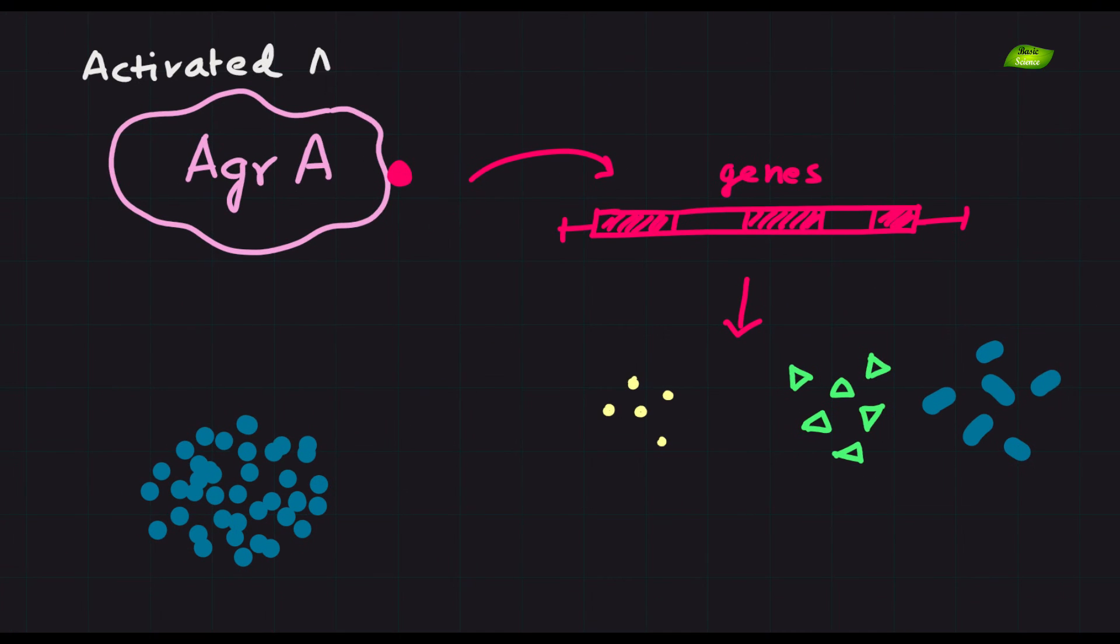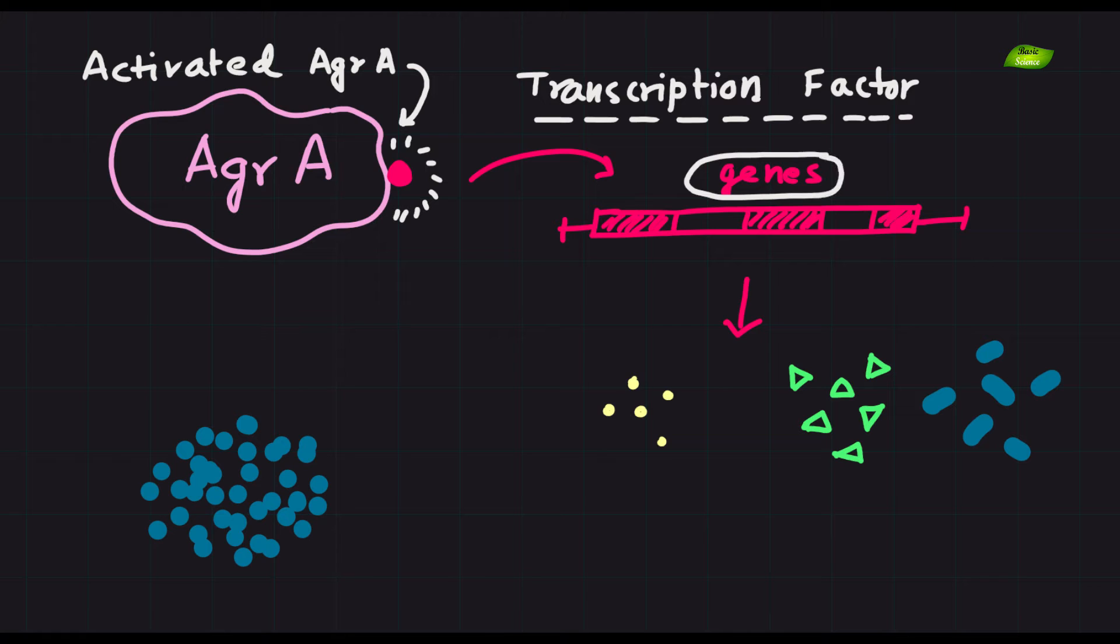Activated AGRA, typically in its phosphorylated form, acts as a transcription factor, modulating the expression of target genes.